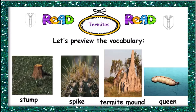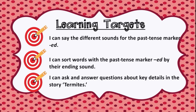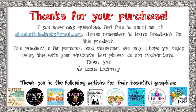Now let's review the vocabulary: 'stump,' 'spike,' 'termite mound' — you can see the termite mound looks so big — and 'queen.' Open your worksheet 19.2 and complete the activity. I remain your teacher, Miss Sharon. Hope you had an amazing time in this lesson. See you again in our next class. Bye!